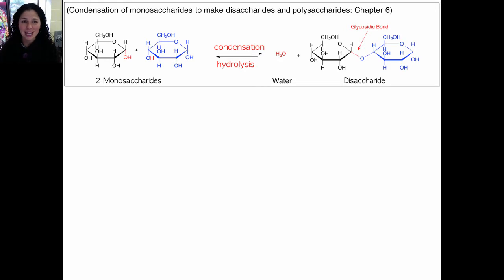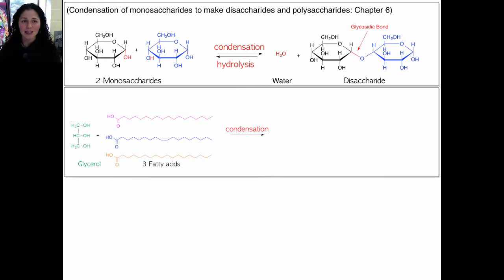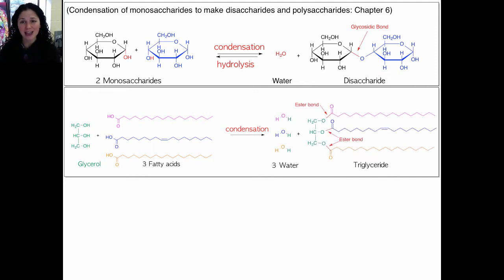We saw this a second time when we took glycerol and three fatty acids to make triglycerides and three water molecules. This was again a condensation reaction. This time the new bond was an ester bond and it created an ester functional group. The opposite reaction is breaking bonds with water, and it is hydrolysis.